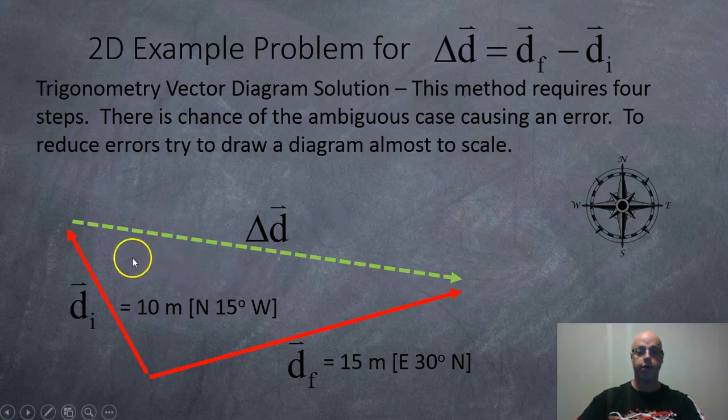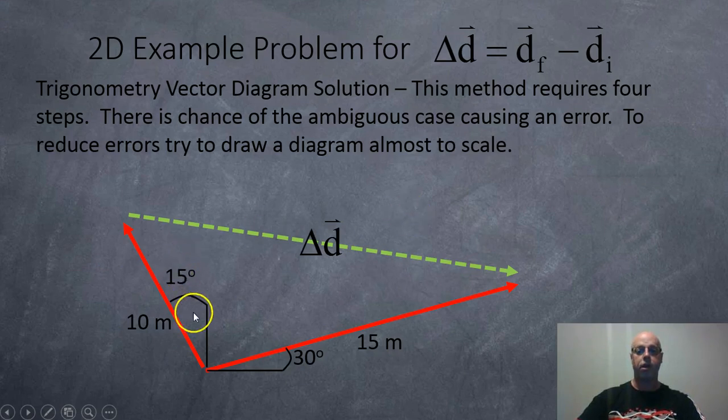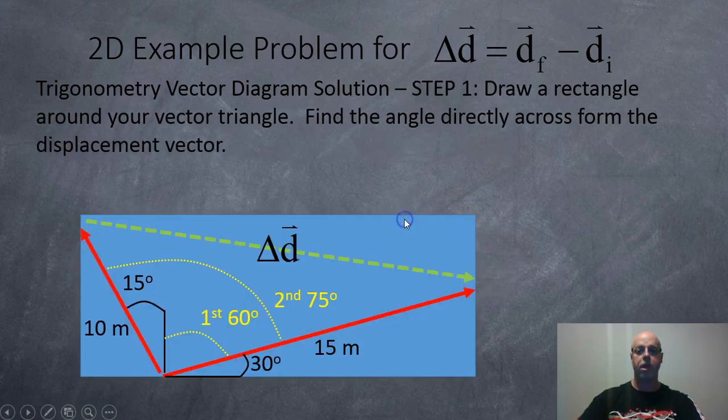So here we have our vector picture which we have to draw first, and here it is again. So what we need to do is the box trick: we're going to draw a rectangle box around our vector triangle, and at least one of the vertices of the triangle has to touch the vertices of the rectangle.